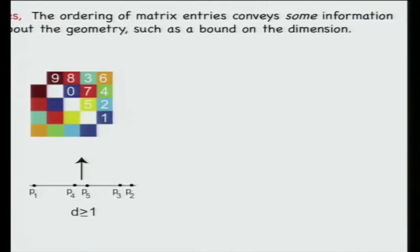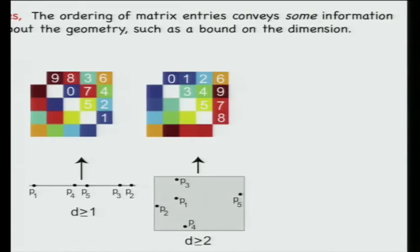Consider points on a line: the ordering of matrix entries is labeled 0 (smallest), 1, 2, and so forth. Given a matrix with this ordering, you can realize it might embed in dimension two but not in dimension one. The reason is simple: you cannot have three consecutive smallest distances all coming from the same node on a line.